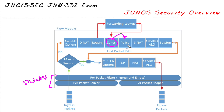Once we have all that, I take a look to see if there's going to be any source network address translation or any application layer gateway processing. Once that's all done, I have created my session — I put that information into my session table, create a flow entry, and it's cached in that flow table.